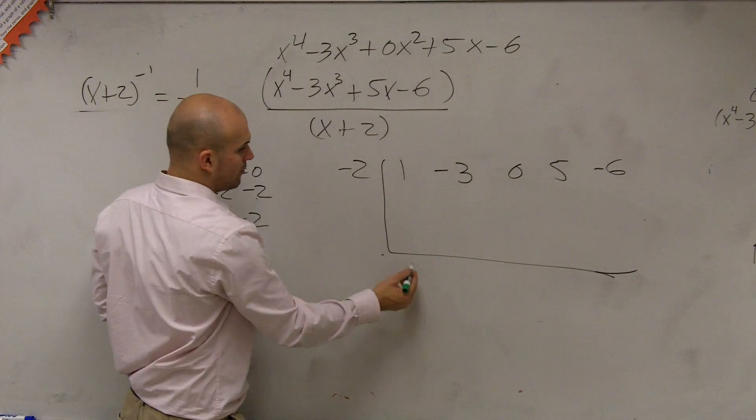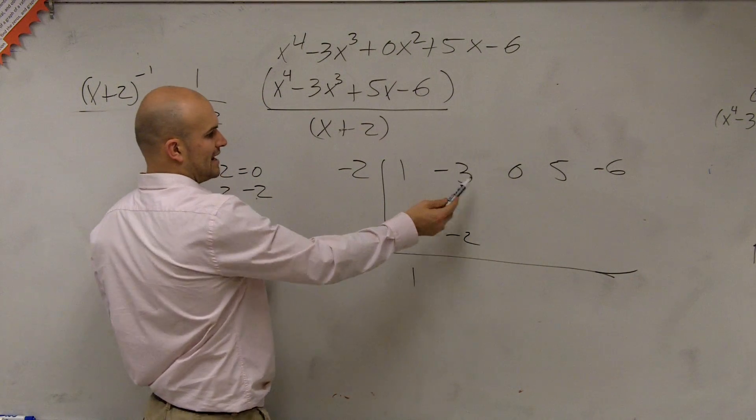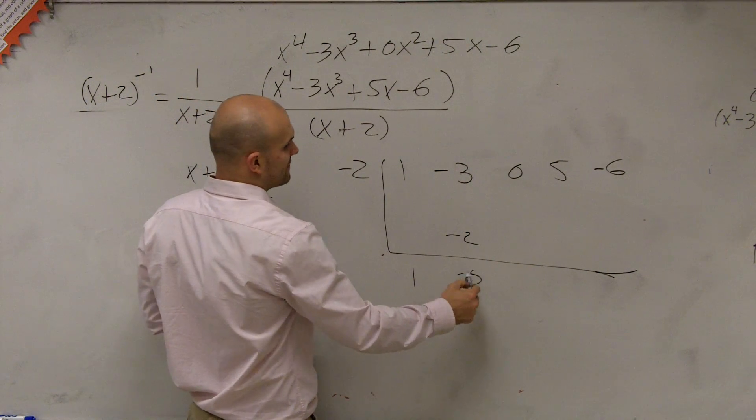17. So now, first one, bring it down. 1. 1 times negative 2 is negative 2. Negative 3 plus negative 2 is negative 5.